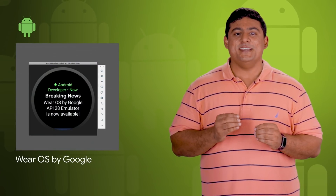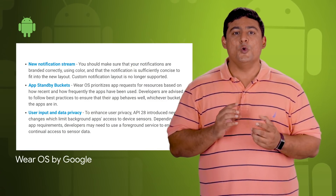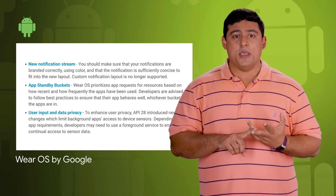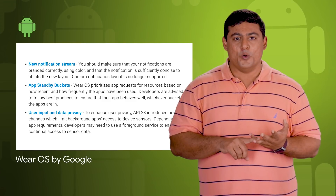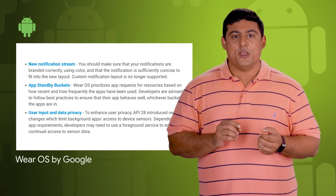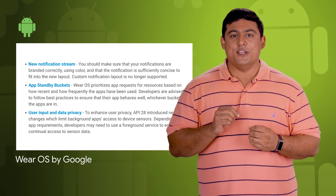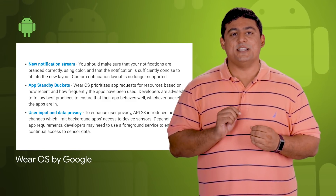The final API 28 emulator image for Wear OS is now available. Highlights of API 28 include a new notification stream, app standby buckets, and more. Take a look at the post linked in the description below for the details and to get started.